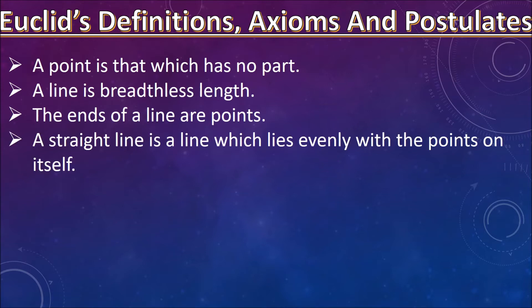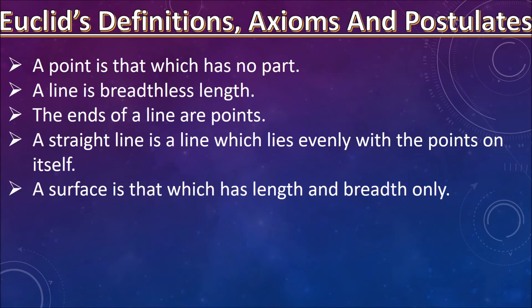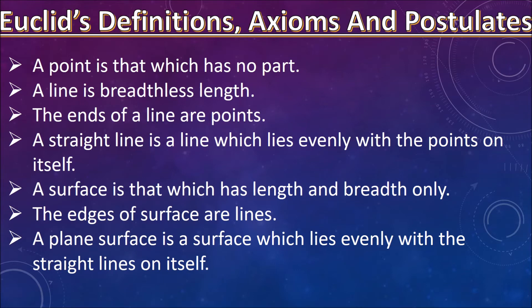a straight line is a line which lies evenly with the points on itself. A surface is that which has length and breadth only. The edges of a surface are lines.